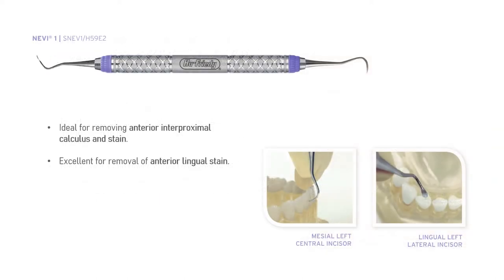Navy 1 is ideally used for removing interproximal calculus and stain. From this picture you can see this curette is engaged between the two teeth surfaces in the interproximal surface. It is also excellent for removing anterior lingual stain. In the next slide we will talk about Navy 2.